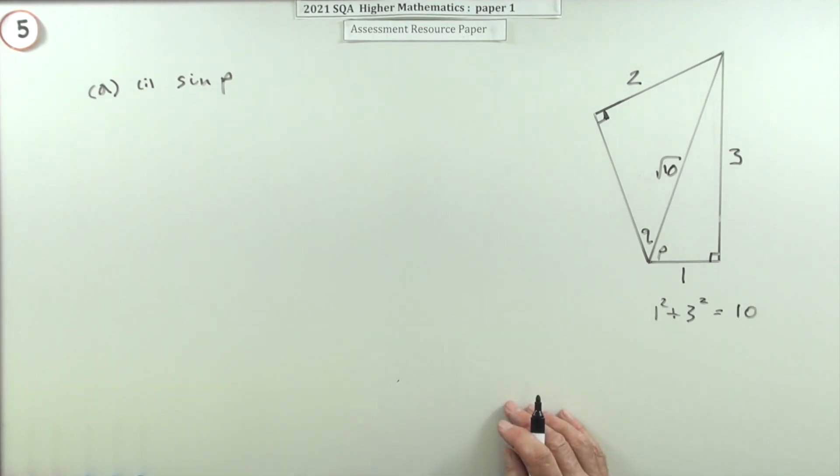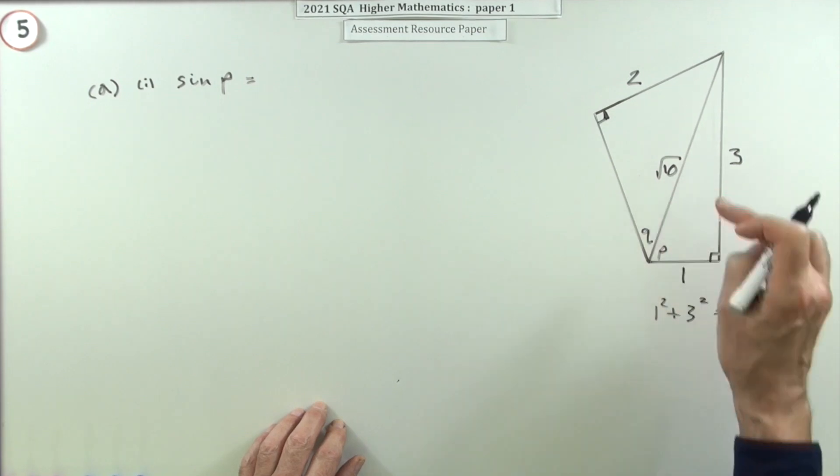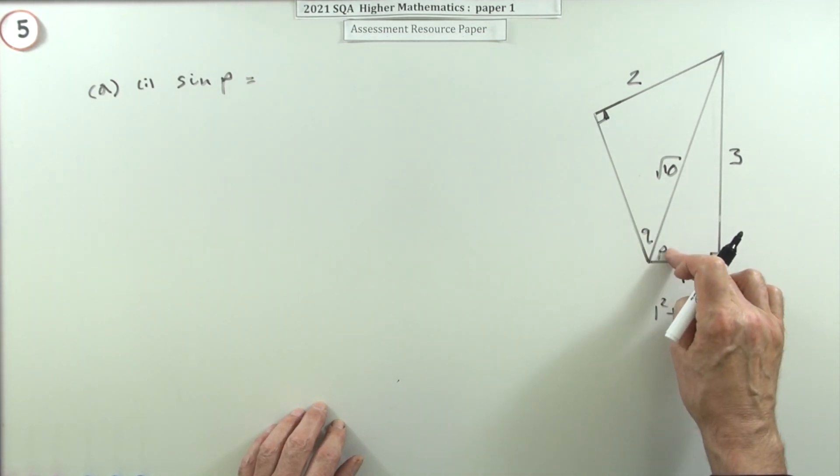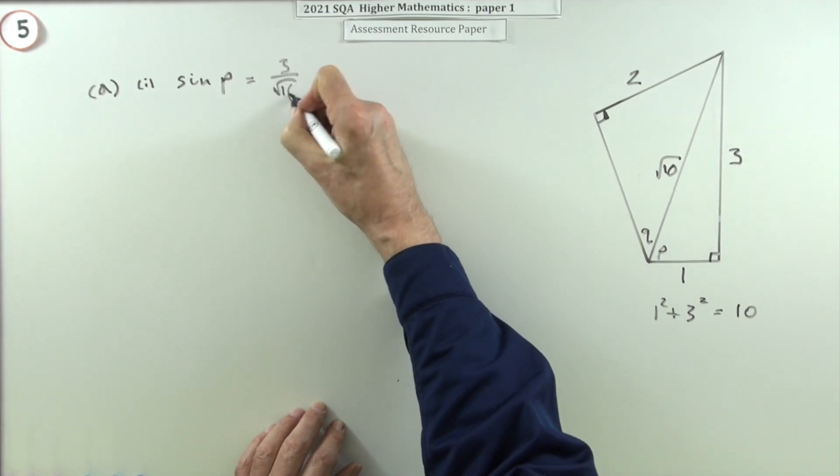Now that's obviously a mark, but that's going to appear here, because now that I've got that hypotenuse, I can get the sine. The sine is the opposite over the hypotenuse, so that's 3/√10, and that's the first mark.